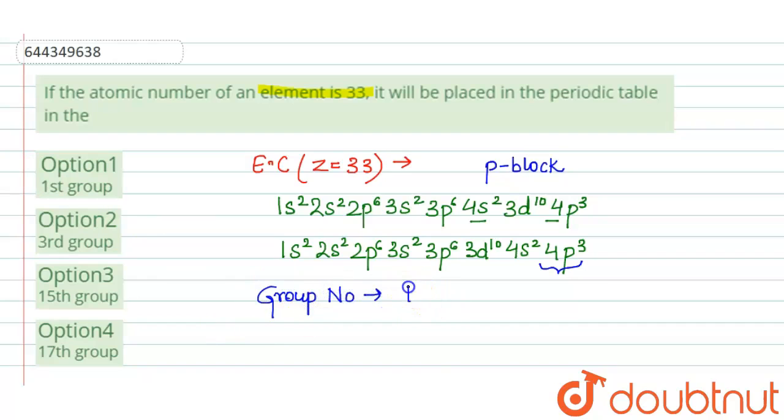The group number is given by 10 plus the number of valence electrons. Here, the valence shell is the fourth shell, which has 2 plus 3 equals 5 valence electrons.